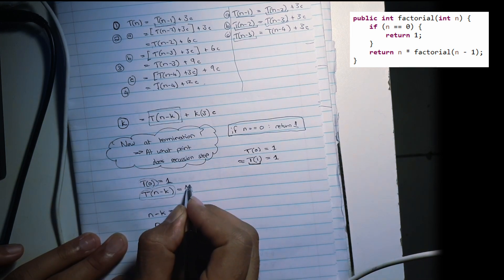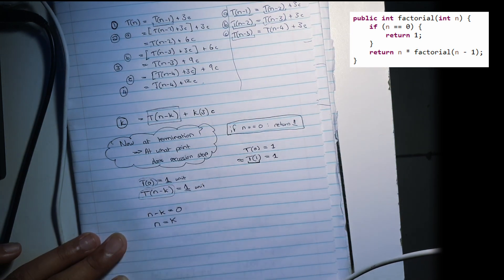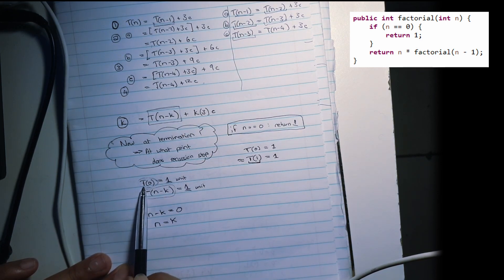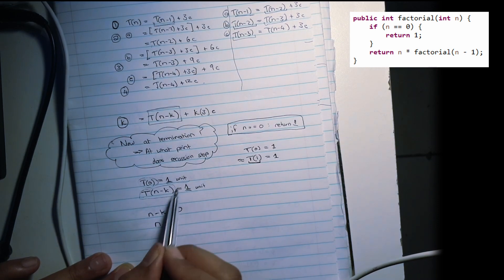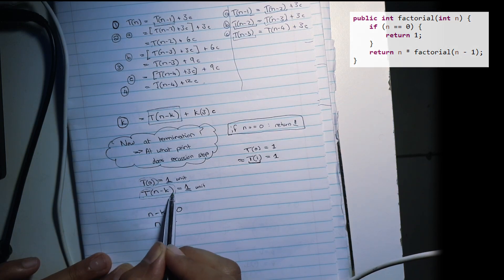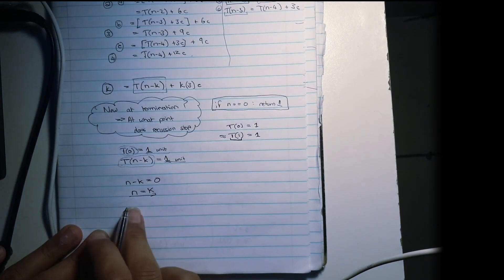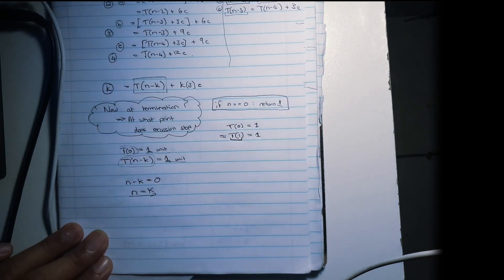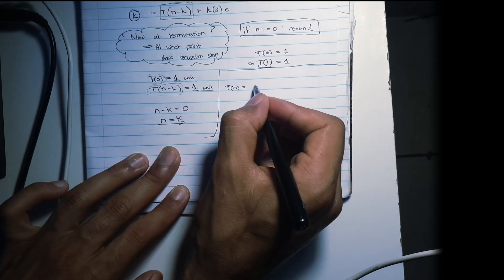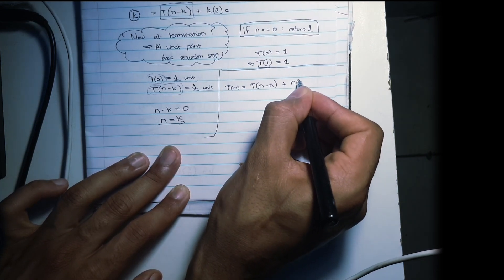The time it takes for this to compute is just one unit. So at termination, the time it takes for T of N minus K to compute is one unit. That's how we arrived at this expression. We're going to substitute the value of K back in this formula. In this case, we have T of N minus N plus N times 3 times C.